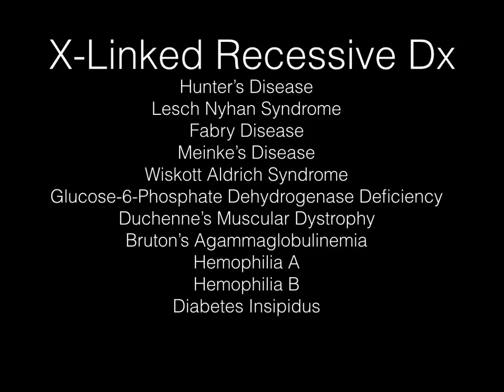Here is the list: Hunter's, Lesch-Nyhan, Fabry, Menke's disease, Wiscott-Aldrich syndrome, G6P dehydrogenase deficiency, Duchenne muscular dystrophy, Bruton's agammaglobulinemia — also known as X-linked Bruton's agammaglobulinemia — hemophilia A, hemophilia B, and diabetes insipidus. I'm going to flip the slide and teach you the song. It's pretty self-explanatory where all the diseases lie, so let's get to it.